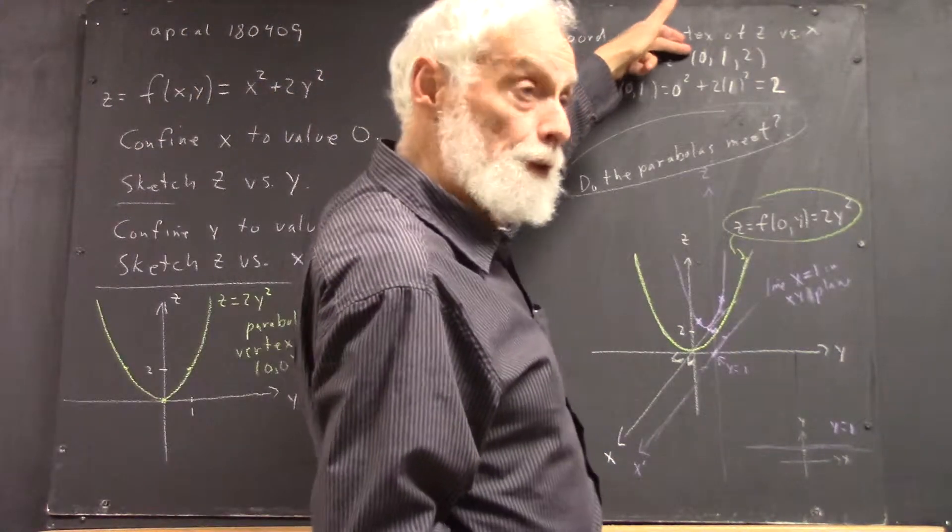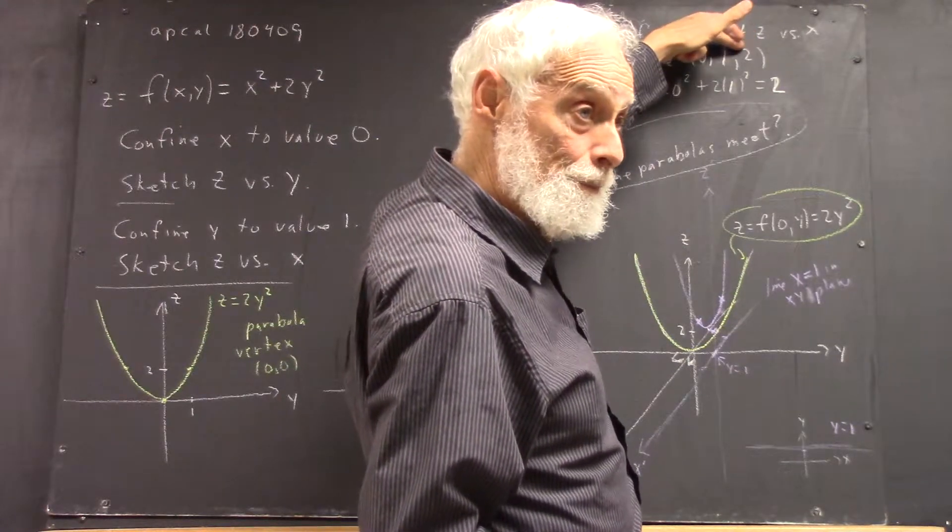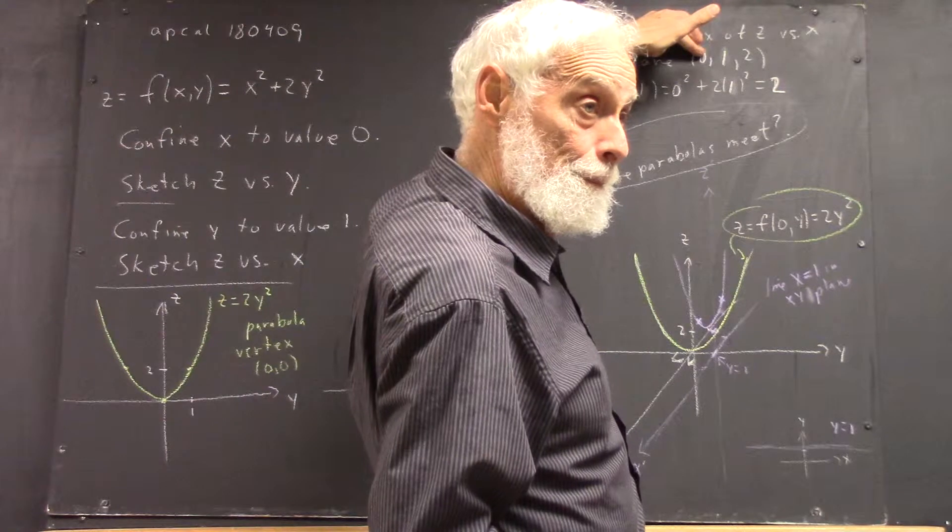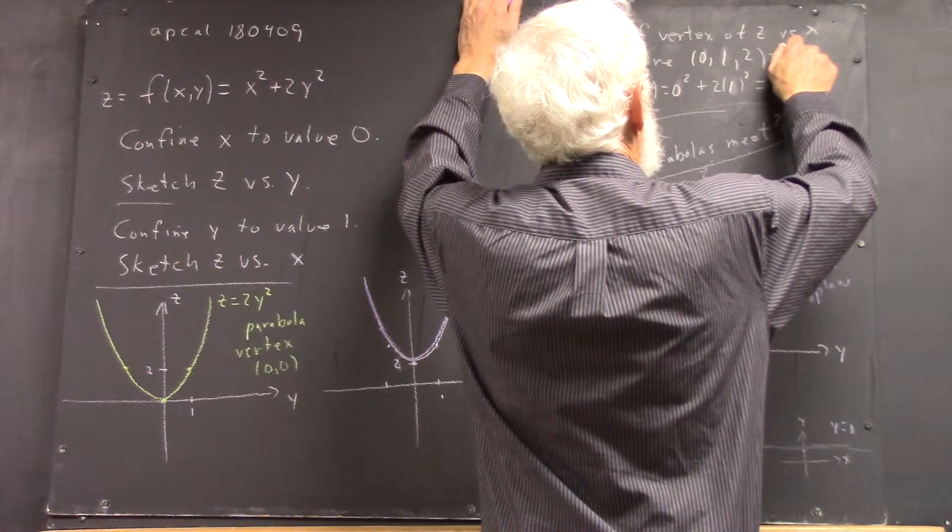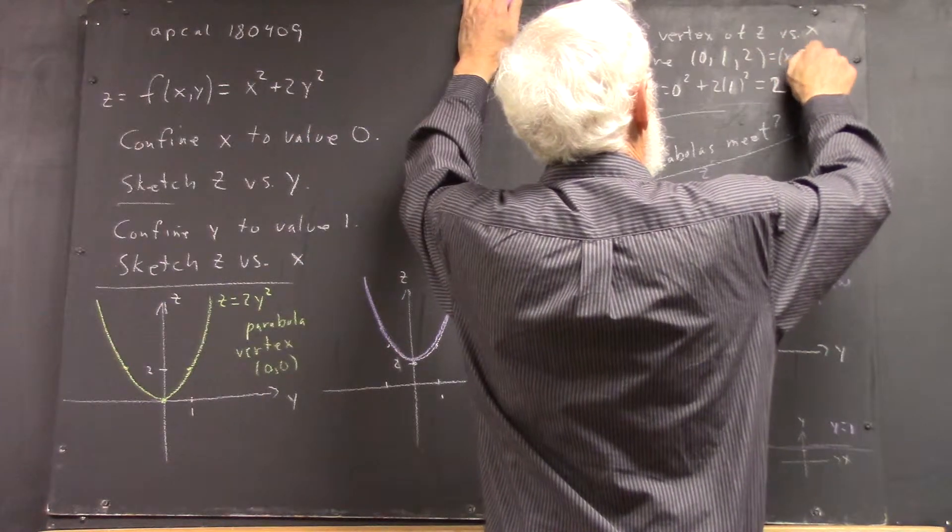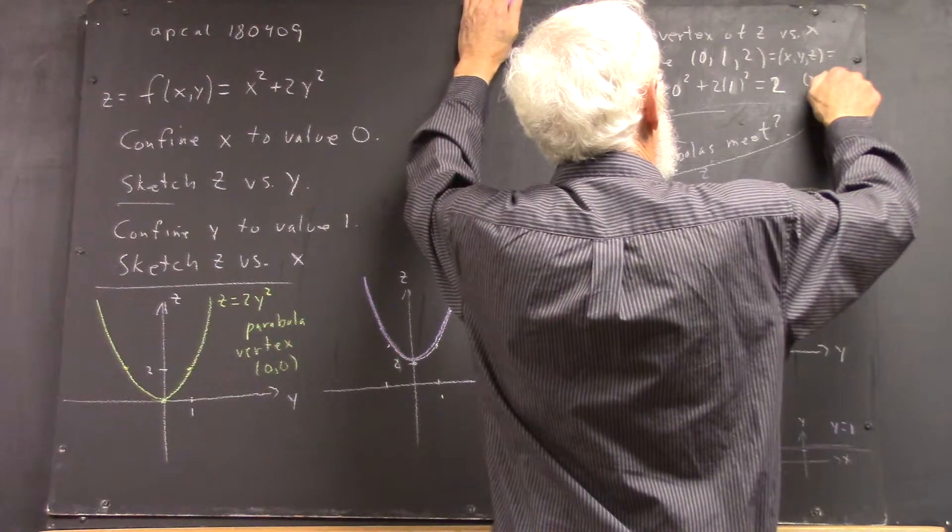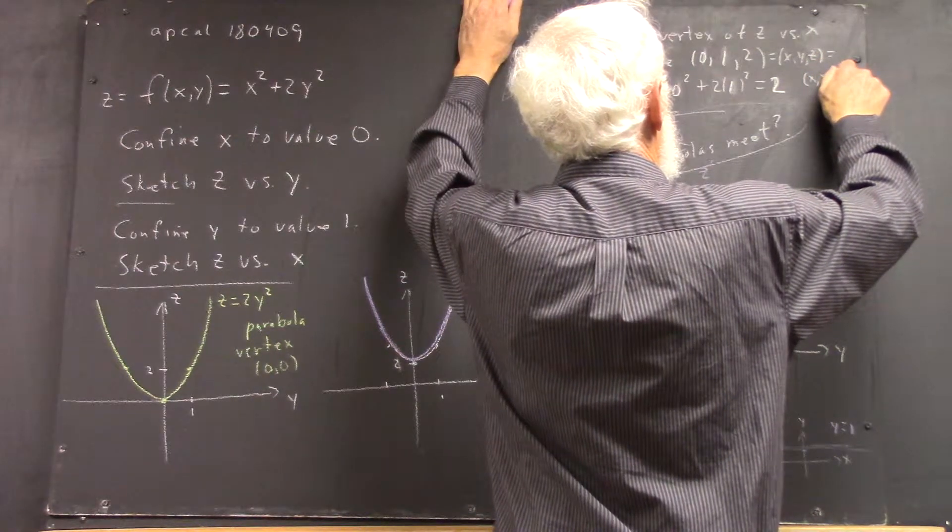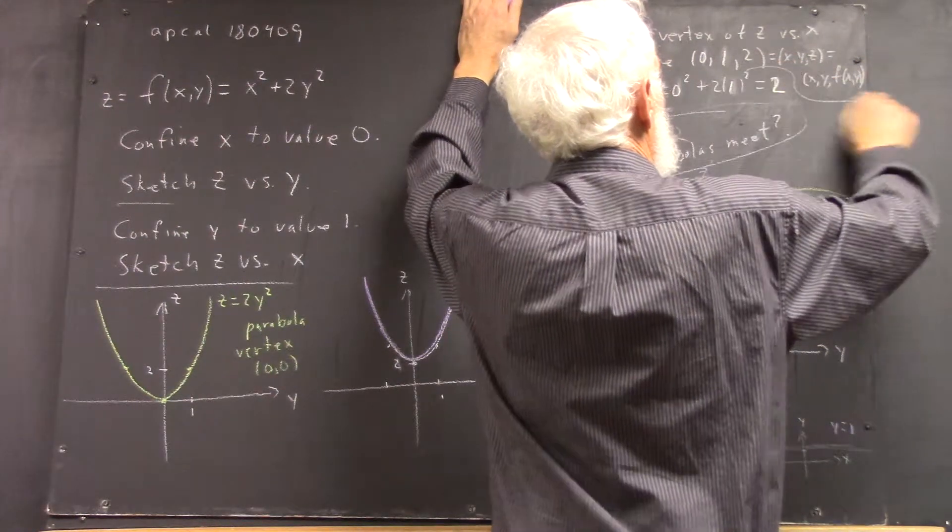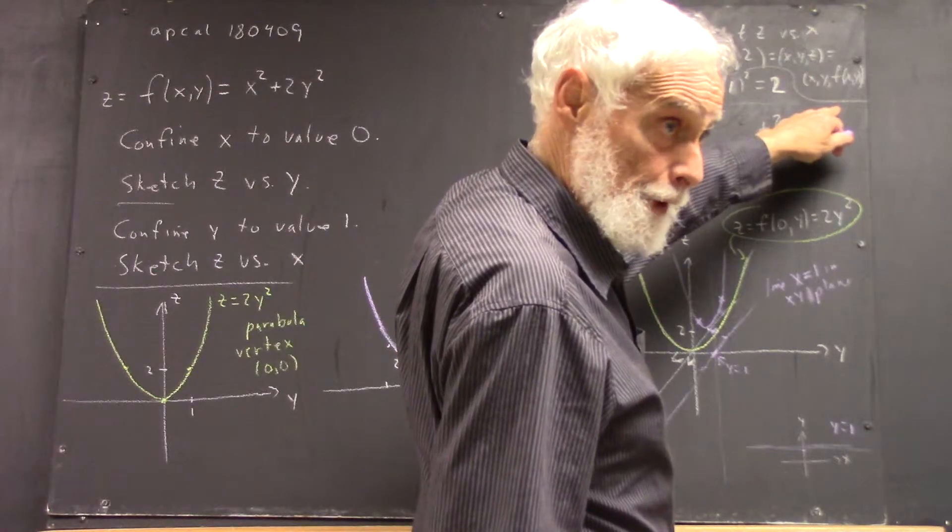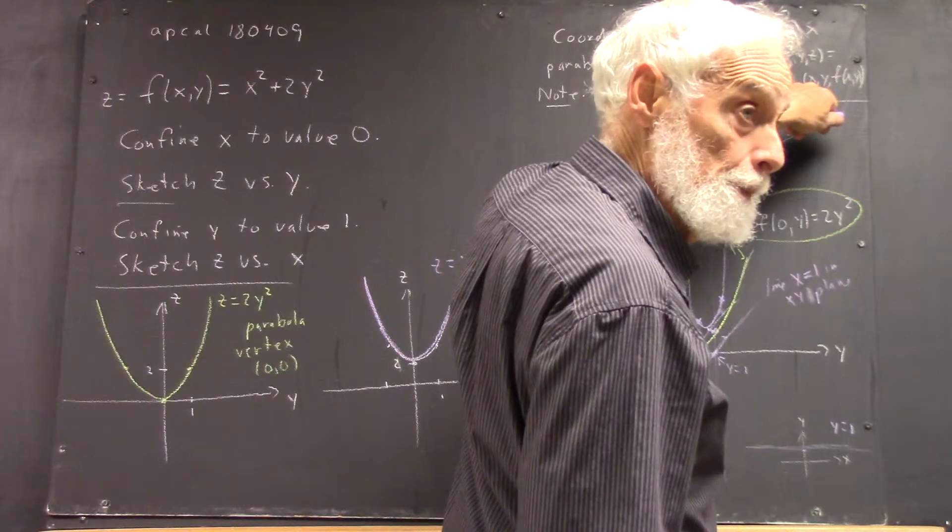Now this is consistent with this, right? This is a point x, y, z, right? And z is f of x, y. So that notation is worth thinking about. We'll come back to it. We'll use it again, but there's one example of it.